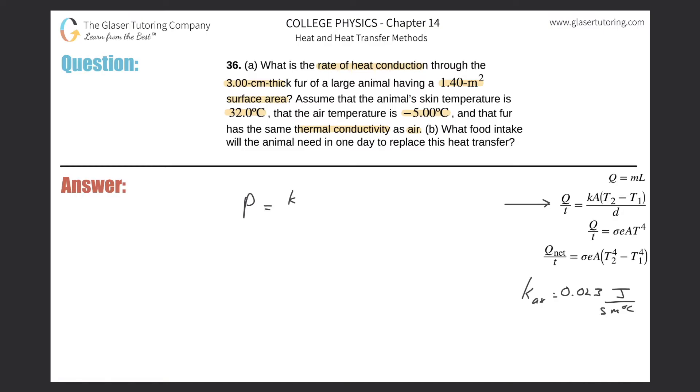So I'm just going to substitute that as P for right now, then that's times A. I'm just rewriting the formula, T2 minus T1, the temperature difference amongst the two surfaces, and then divided by the thickness.